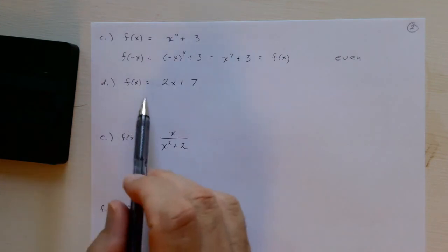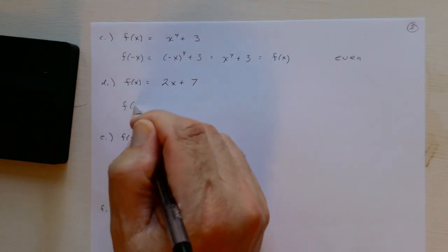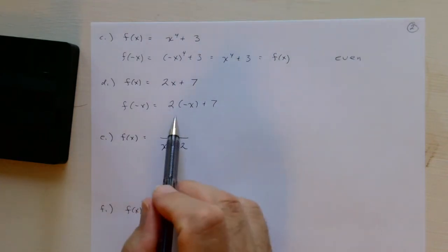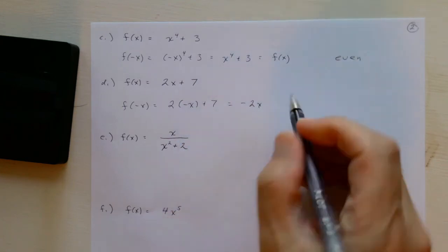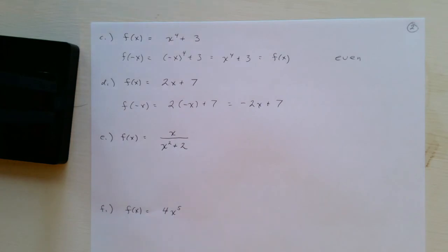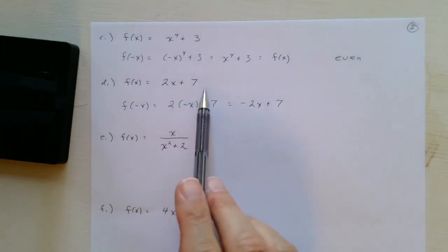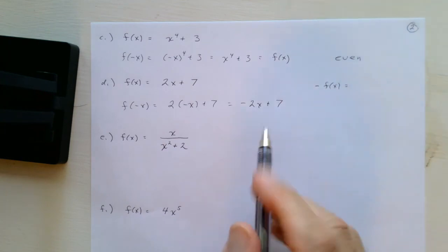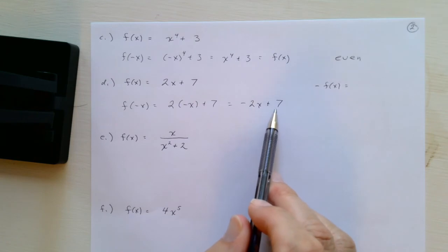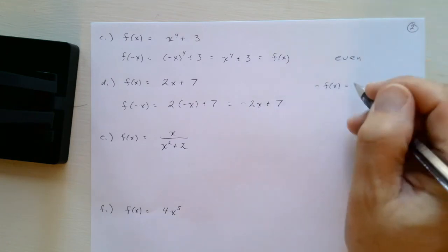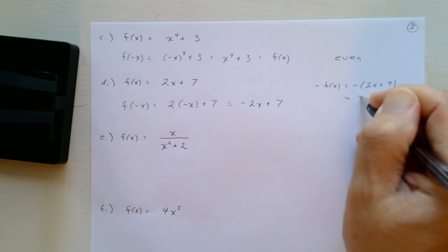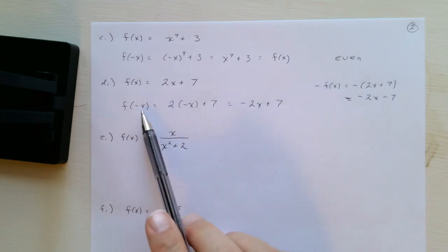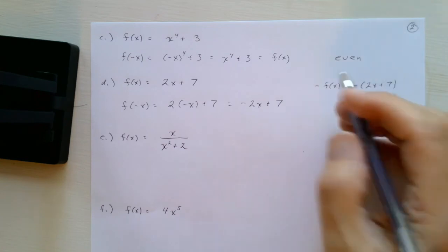For f(x) = 2x + 7, f(−x) = 2(−x) + 7 = −2x + 7. This is not equal to f(x), so it's not even. It's also not odd, because −f(x) = −2x − 7, which is different from −2x + 7. So f(−x) equals neither f(x) nor −f(x), making this function neither even nor odd.